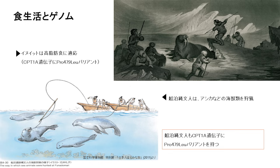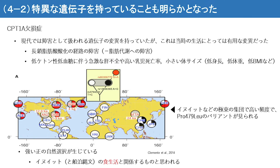次に食生活とゲノムといった話です。今回の船泊縄文人からは高脂肪食に適応していると思われる遺伝子変異が見つかりました。具体的にはCPT1Aという遺伝子に存在するプロリンからロイシンへのアミノ酸の変化となります。このような変異は現代ではイヌイット・エスキモに見られるということが知られています。彼らは海獣類を狩猟し高脂肪食を食べていることから、食生活が船泊縄文人と現代のイヌイットが非常に似ているということになります。